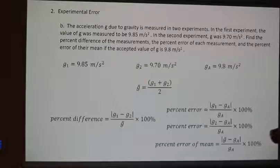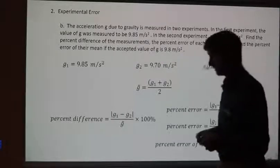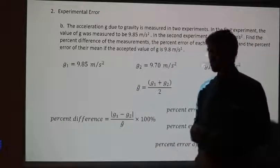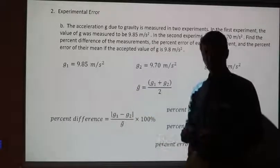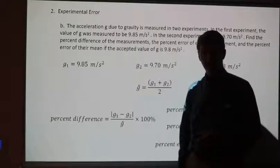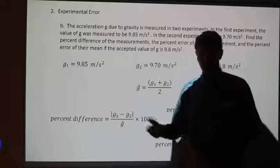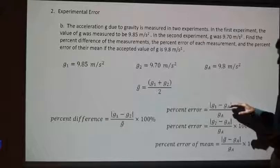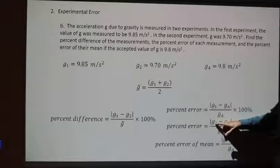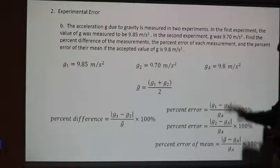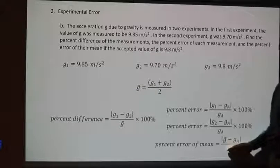We want to calculate the percent difference between the two experimental values — this roughly gives you the precision, showing how closely your values agree. Take the difference between them, divide by the mean, and multiply by 100%. Last, calculate the percent error for each measurement: percent error for G1, percent error for G2 compared to the accepted value, and then calculate the percent error for the mean.